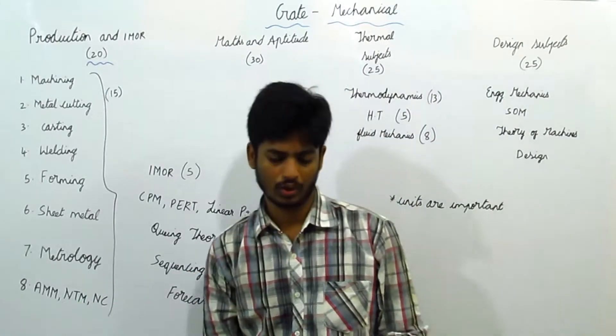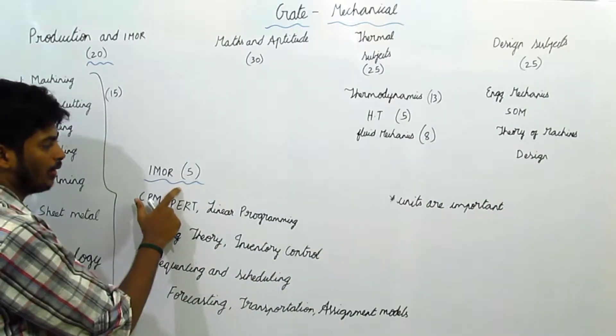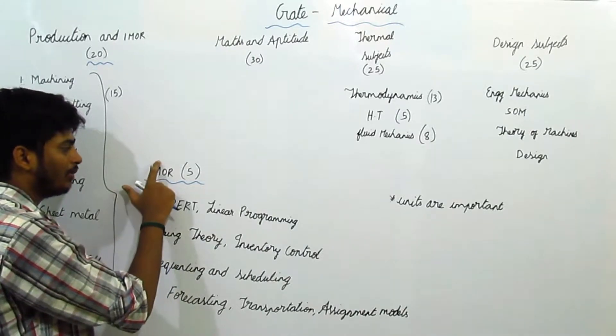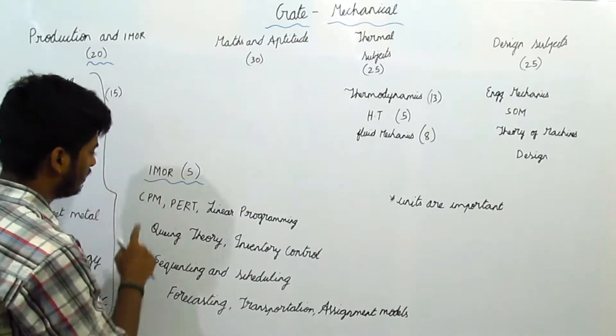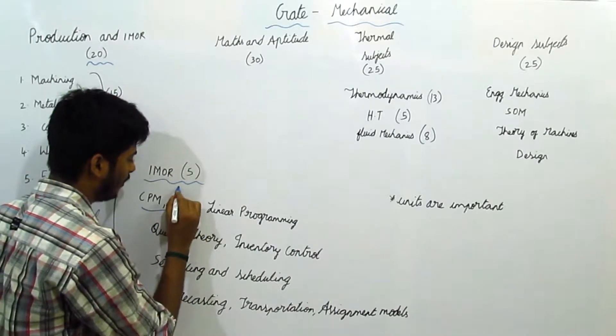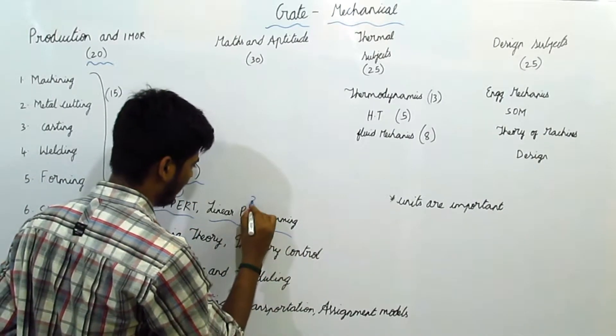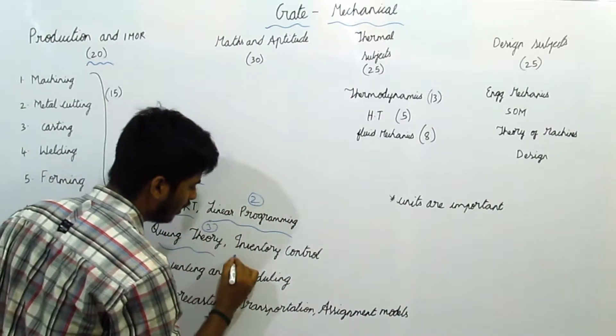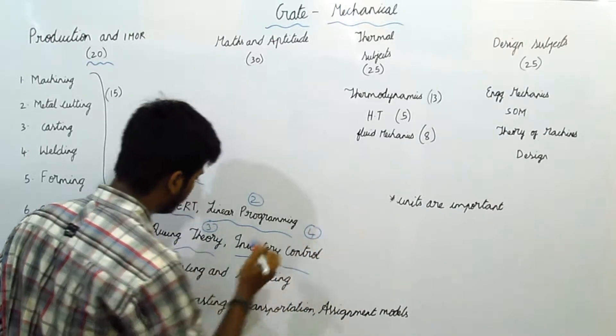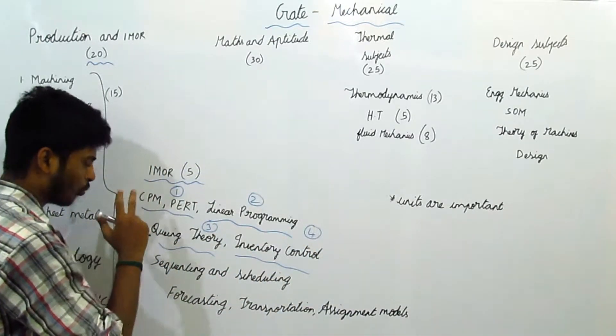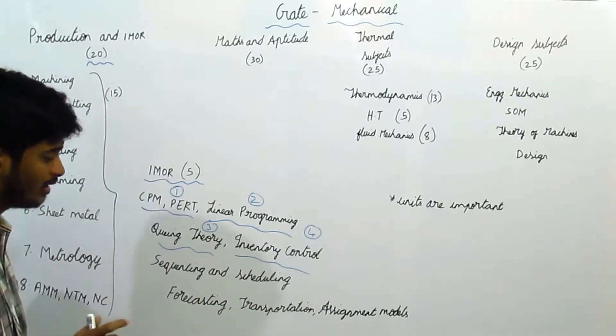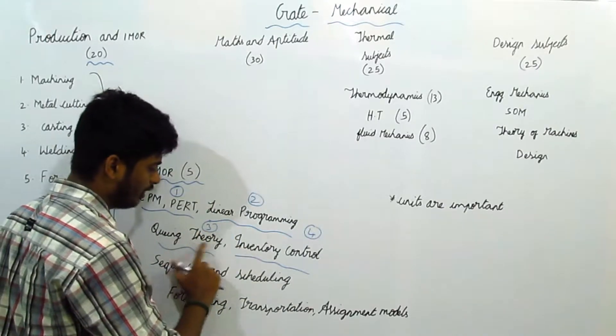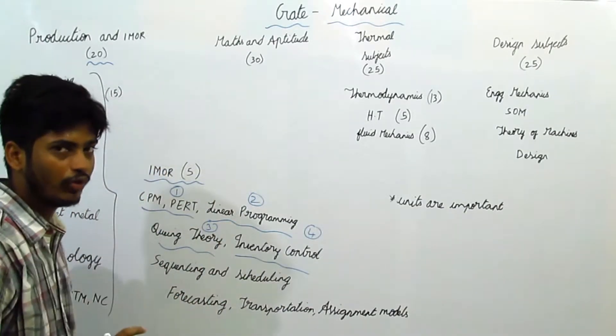NPM refers to numerical control. For I1OR, for Gate Exam, they may ask 5 marks. I1OR refers to industrial management and operation research. CPM code is first topic, these two combined from first topic. Linear programming is second topic and Queue theory is third topic. And inventory control is fourth topic. So, most of the questions in recent past years, they have asked from CPM code and linear programming. These first four topics are important for Gate Exam.